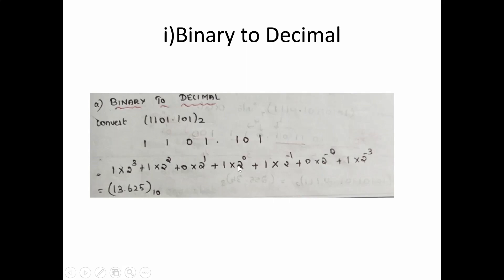Since binary is given, we use 2 to the power of each position. So: 1×2⁰ + 0×2¹ + 1×2² + 1×2³ for the integer part, and for the fractional part the powers are negative: 1×2⁻¹ + 0×2⁻² + 1×2⁻³. When we calculate this we get the decimal answer 13.625 base 10.